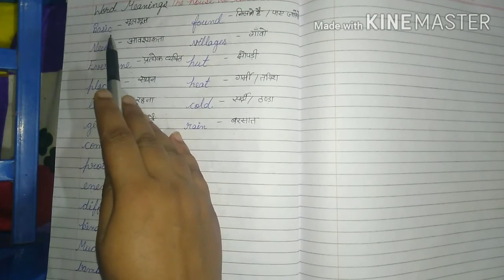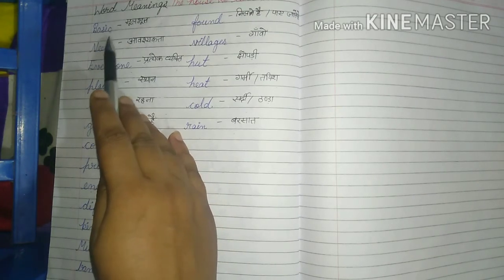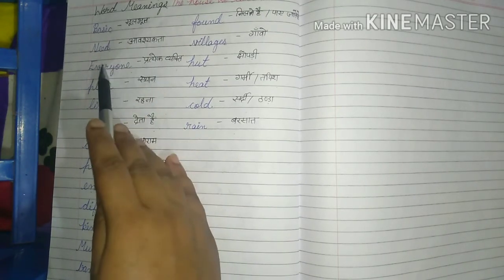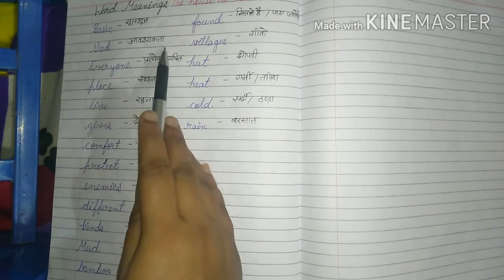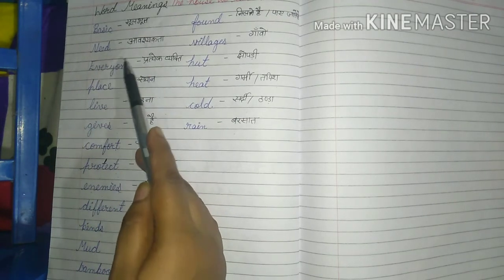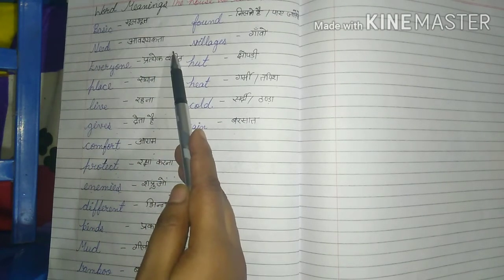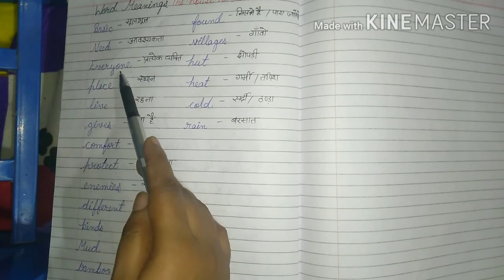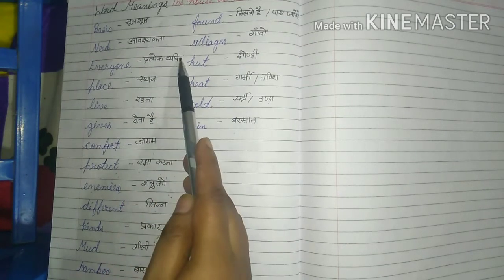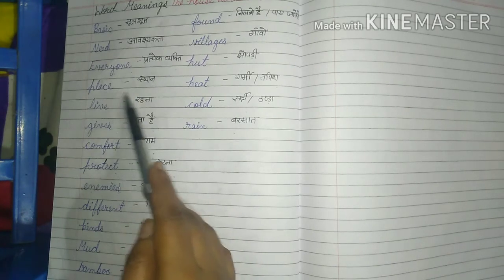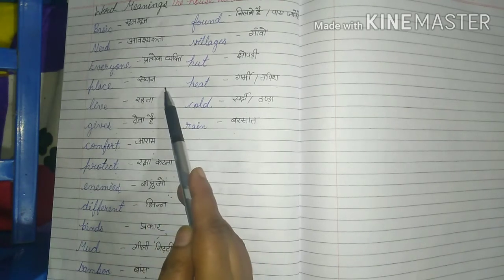Now we revise these word meanings again. BASIC — B-A-S-I-C — basic means 'mulbhoot.' NEED — N-E-E-D — need means 'awashakta.' EVERY — E-V-E-R-Y — everyone means 'pratek vyakti.' PLACE — P-L-A-C-E — place means 'isthan.'